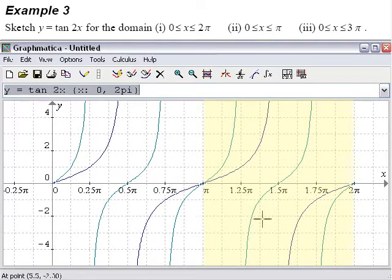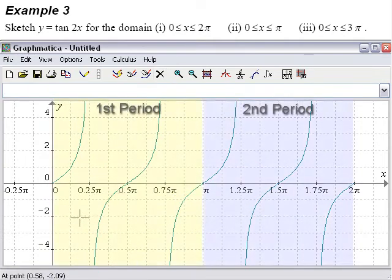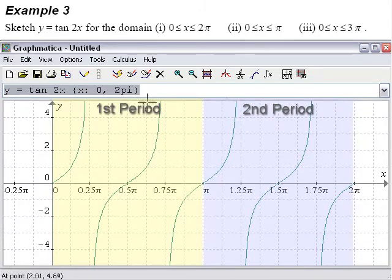It may look a little bit confusing because of the superimposed image here. So let us get rid of the original one. So you can see it more clearly that there are actually two periods in 2π. So this is precisely how our curve will look like for part one.